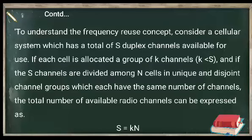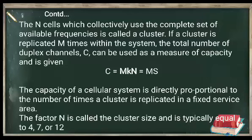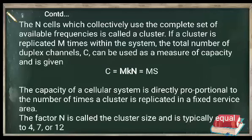To understand frequency reuse, consider a cellular system with a total S duplex channels available. If each cell is allocated a group of K channels, and the S channels are divided among N cells in unique channel groups each having the same number of channels, the total number of available radio channels is expressed as S = K × N. N is the number of cells and K is the group of channels allocated to each cell. The N cells that collectively use the complete set of available frequencies form a cluster. If a cluster is replicated M times within the system, the total number of channels — the capacity C — is given by C = M × K × N.